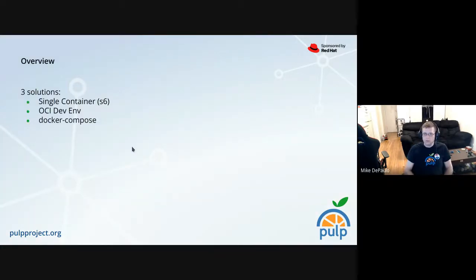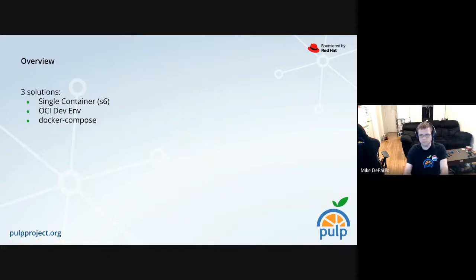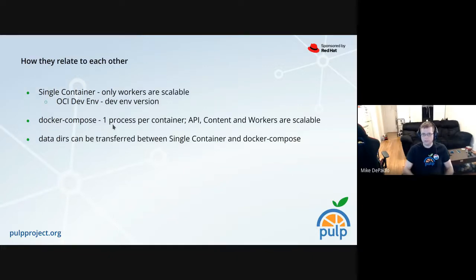One question that comes up is: why have container solutions that don't require Kubernetes? Kubernetes is great — it's the leading paradigm for scalably managing applications. But what happens if you're not trying to do massive scale and don't want the infrastructure required for that? For this reason we have three solutions: the single container, which is just one container running multiple processes with s6 as the service manager; the OCI development environment; and Docker Compose, which does feature multiple containers.